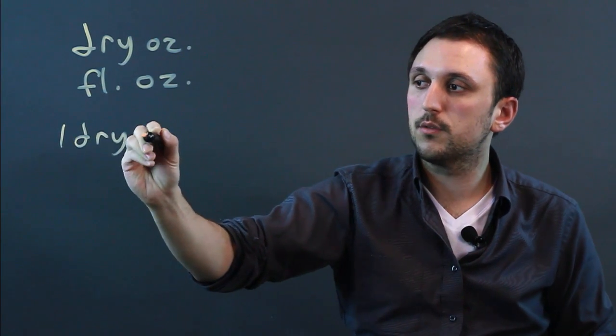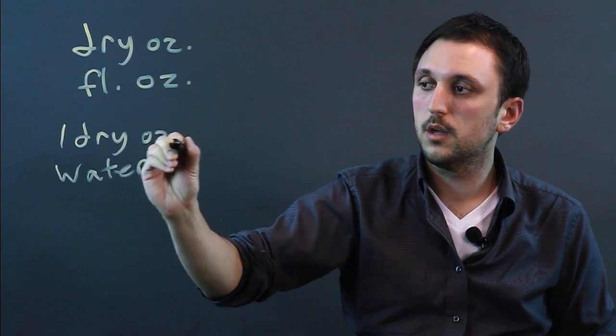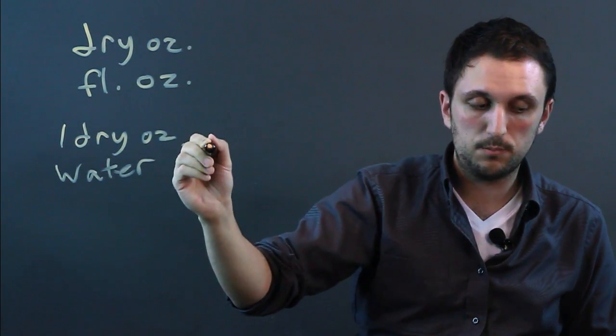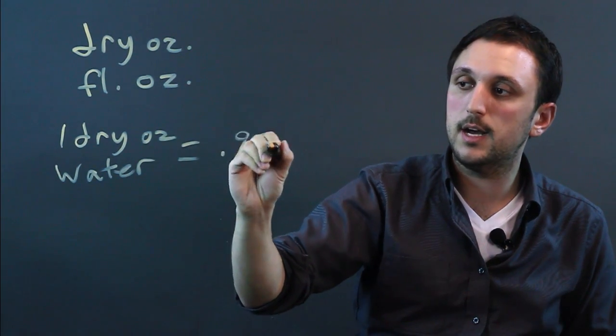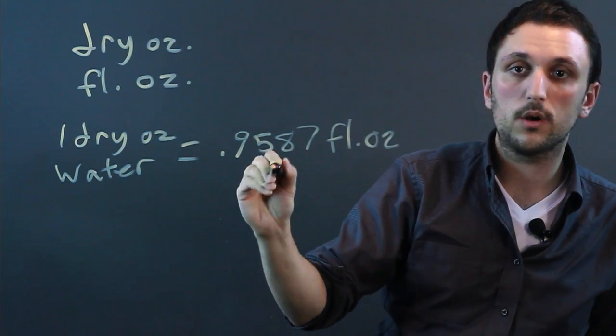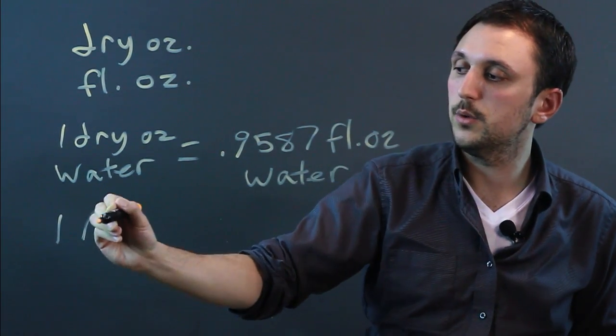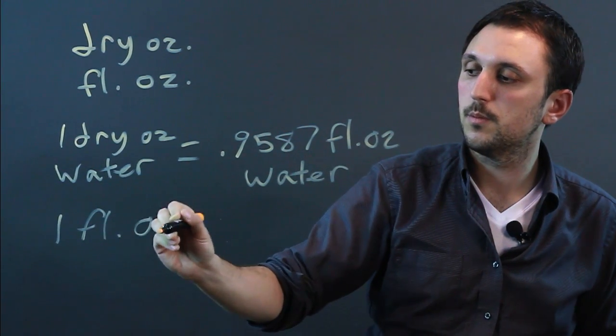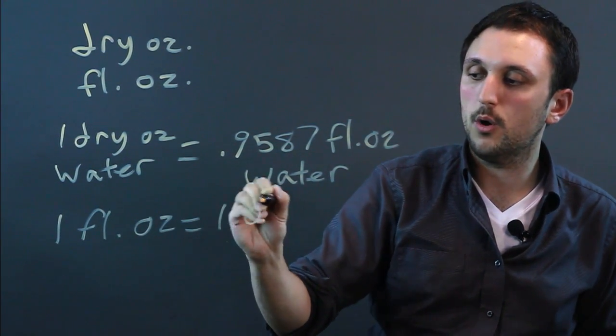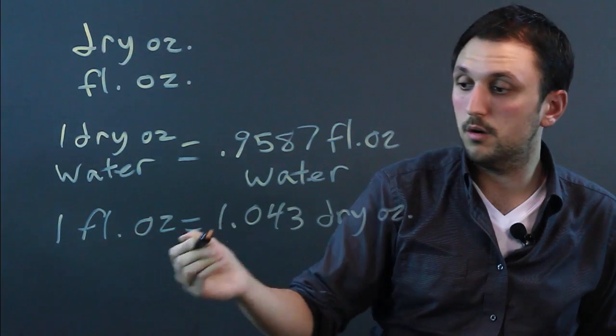one dry ounce of water equals 0.9587 fluid ounces of water, and one fluid ounce equals 1.043 dry ounces of water.